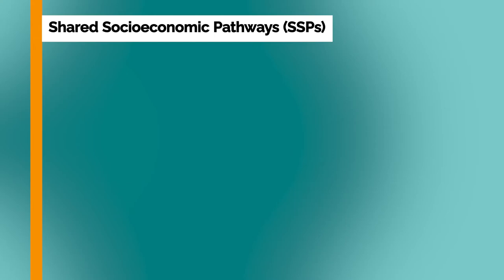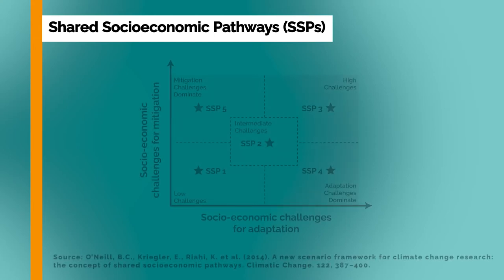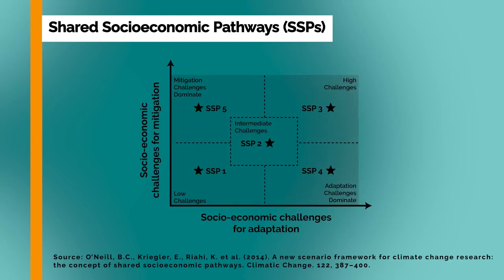In addition, over the past few years, an international team of climate scientists, economists, and energy system modelers created a range of new pathways that examine how global society, demographics, and economics might change over the next century. They are collectively known as the shared socioeconomic pathways, or SSPs. These pathways look at five different ways the world might evolve in the absence of climate policy, and how different levels of climate change mitigation could be achieved when the mitigation targets of RCPs are combined with the SSPs. The SSPs are based on five narratives describing broad socioeconomic trends shaping future society, intended to span a range of plausible futures.